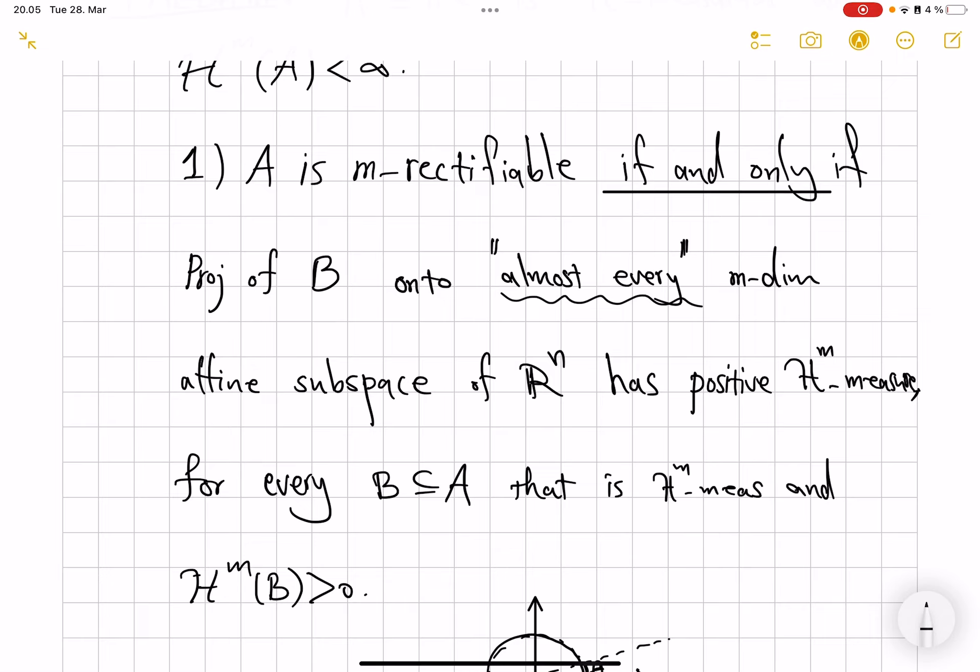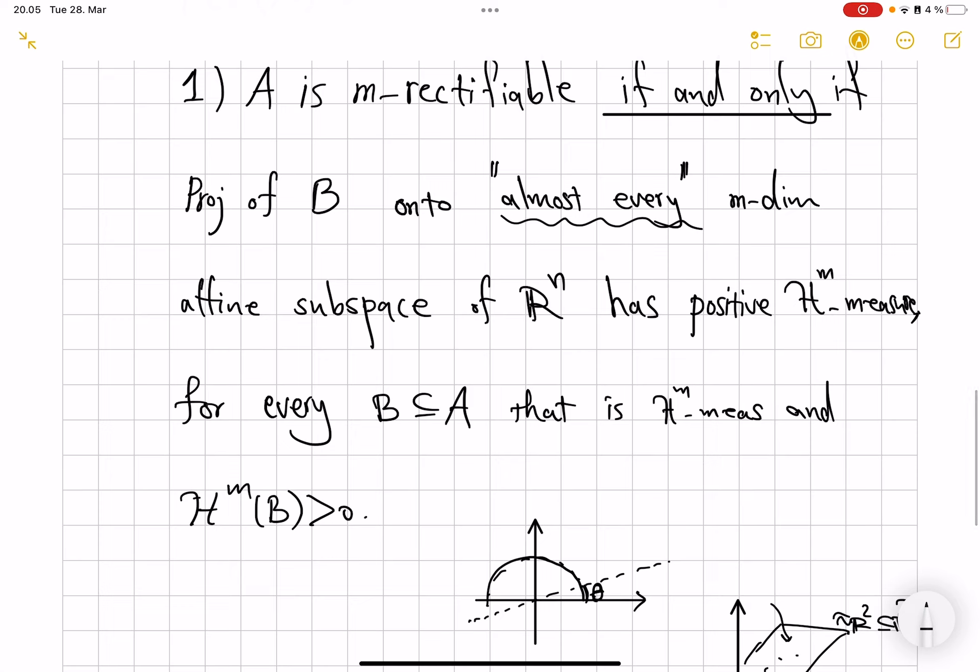The claim is that a set is one-rectifiable, for example, in R^2, in the language of Falconer is a regular set, if and only if its projection onto almost every line has positive measure. So it's the converse of the previous result we had seen: that if your set is rectifiable, if your set is regular equivalently, then its projection on almost every direction has positive measure. This is saying that, on the other hand, in the converse direction, if your projections have positive measure in almost every direction, then your set is actually m-rectifiable.